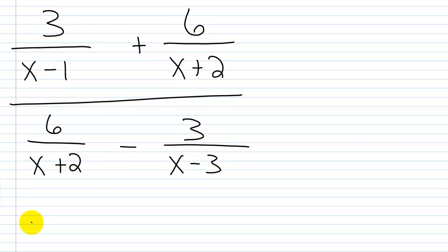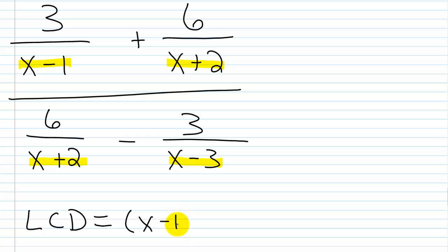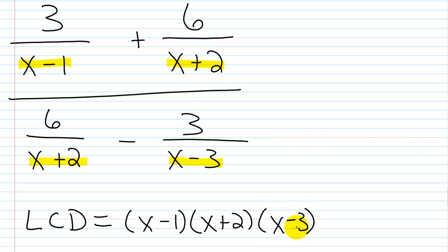So the LCD — if I look at the denominators involved, I've got an (x minus 1), an (x plus 2), another (x plus 2), and then an (x minus 3). Everything has to go in there, but I have a duplicate (x plus 2) so I only need one. So the LCD is (x minus 1) times (x plus 2) times (x minus 3).